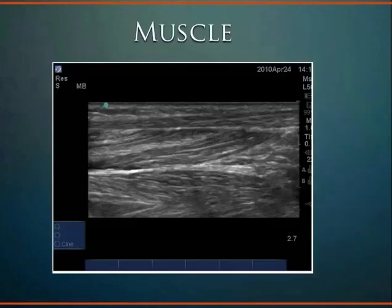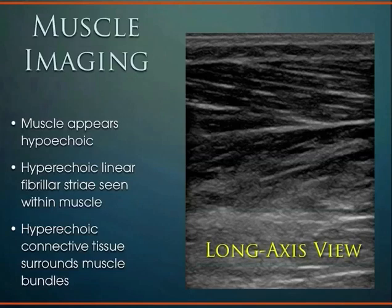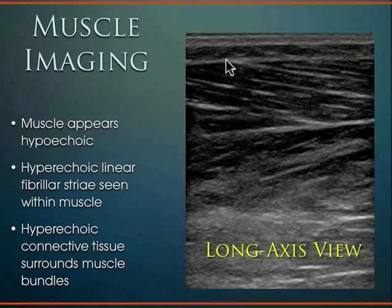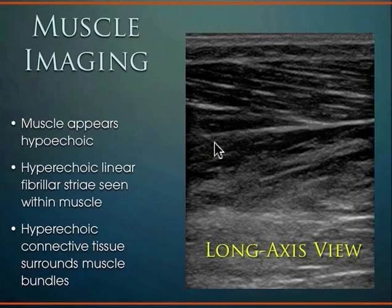Moving on to muscle: muscle is another tissue very nicely seen on ultrasound. Just like tendons, muscles have a specific imaging pattern. Muscle tends to be more hypoechoic — not as dense as tendon or ligament. It also has a fibrillar pattern related to the interwoven connective tissue within the muscle. On a longitudinal view: superficial subcutaneous structures, then the connective tissue fascial plane, deep to that the fibrillar striated component of muscle, another fascial layer, and then deeper fibrillar muscle structures. Generally more hypoechoic with hyperechoic connective tissue fascial planes.